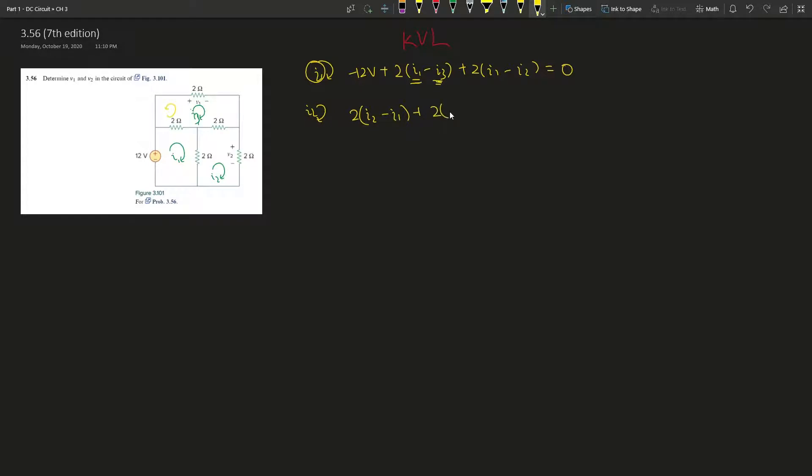So 2 ohms times, well, I'm just going to skip that ohms. 2(i2 minus i1), and then move on to plus 2(i2 minus i3), and then we move to here, which is plus 2i2 equals zero.